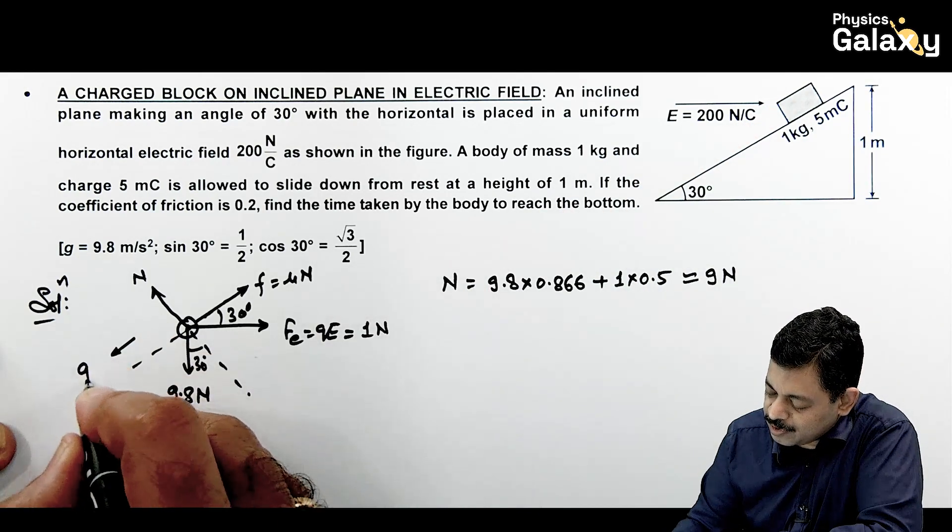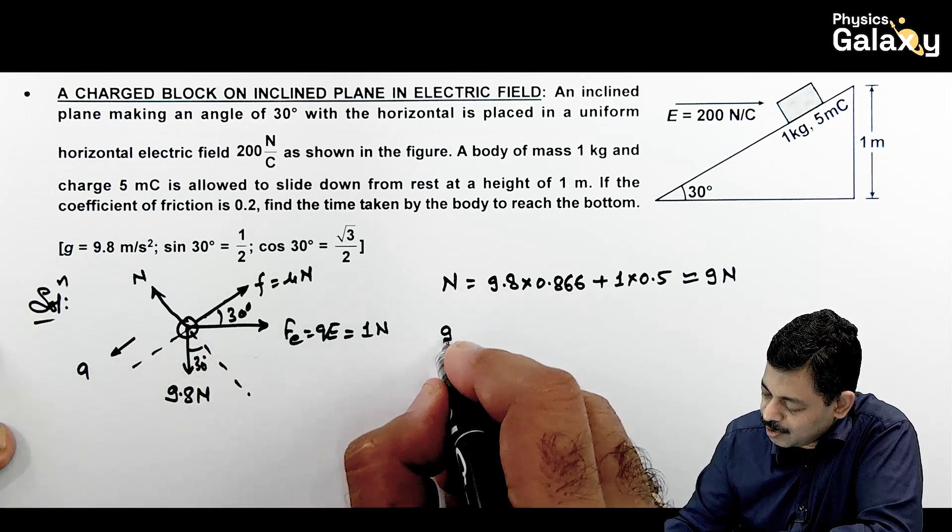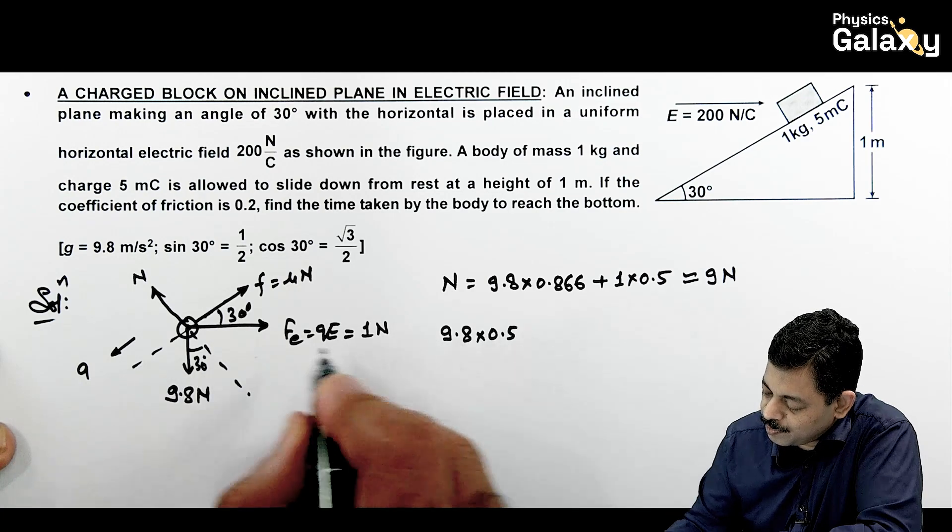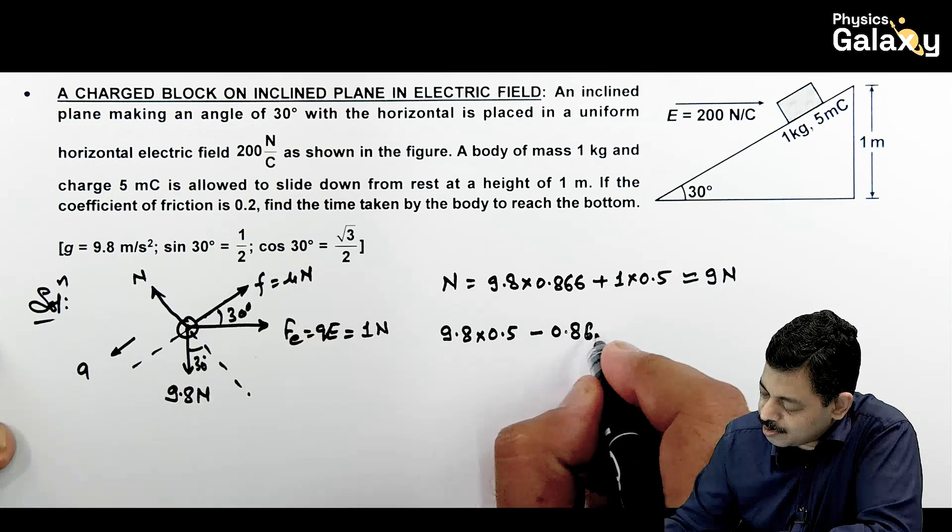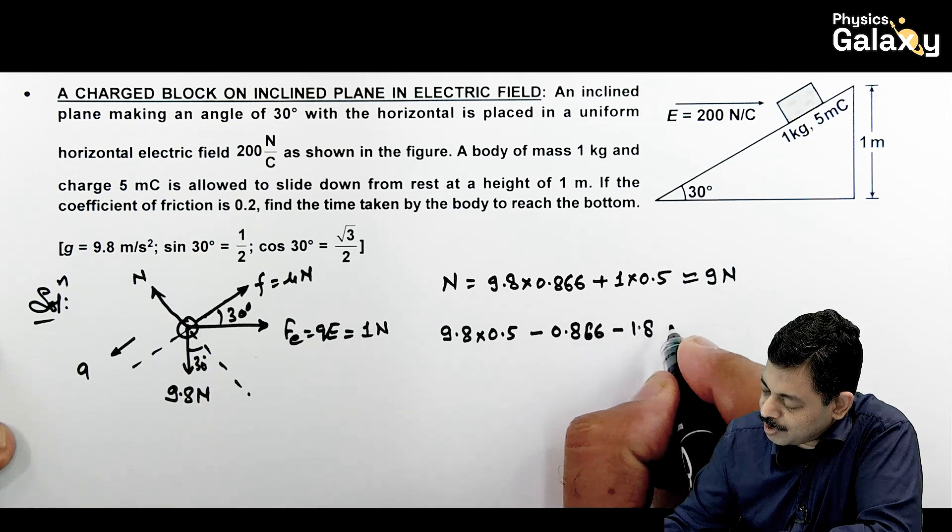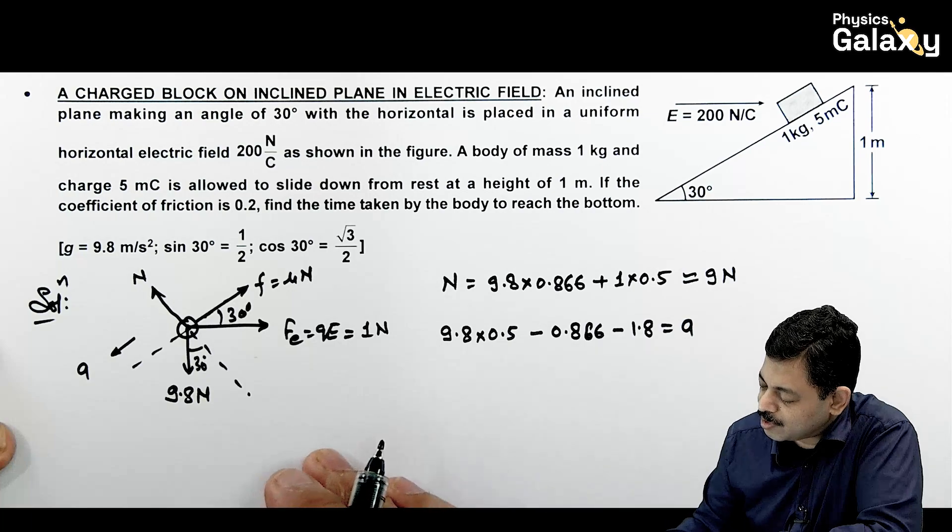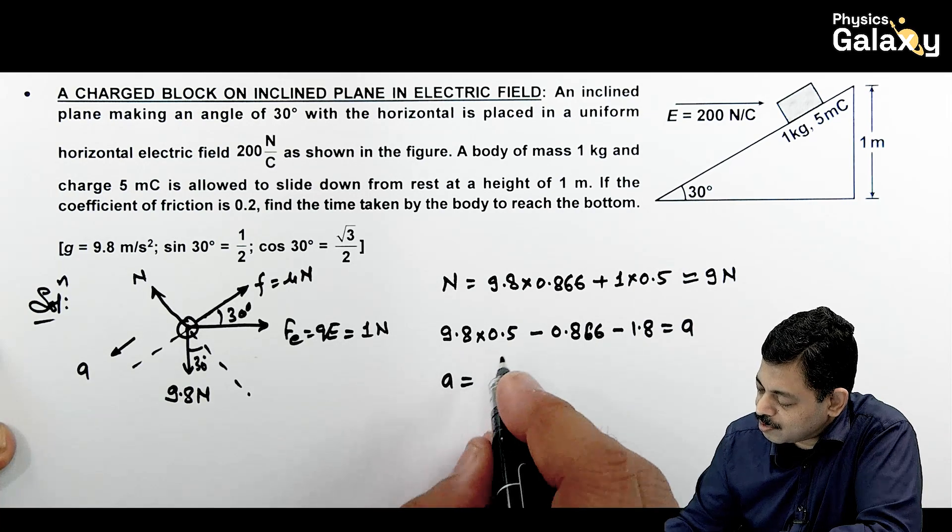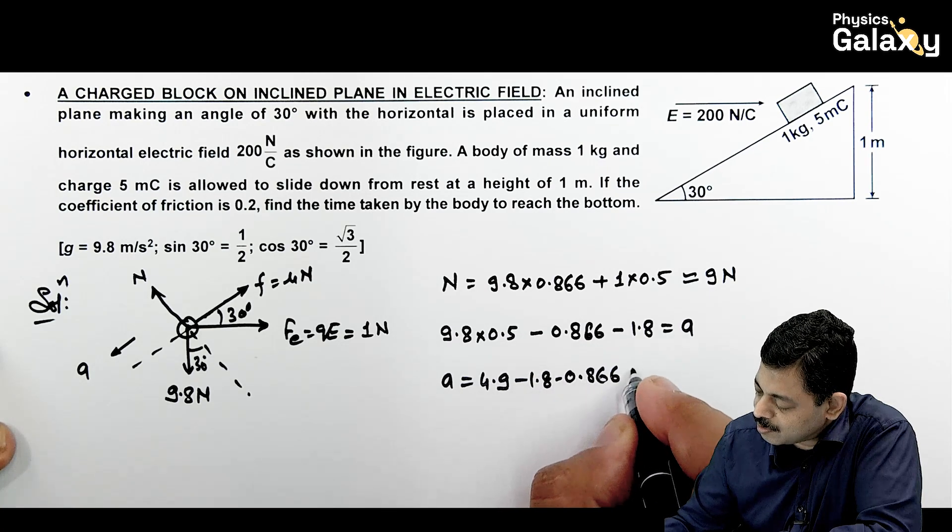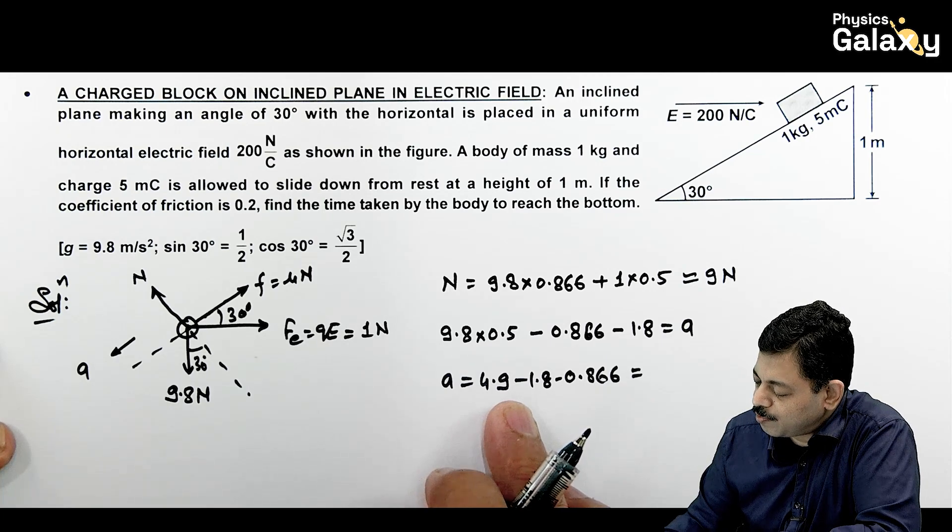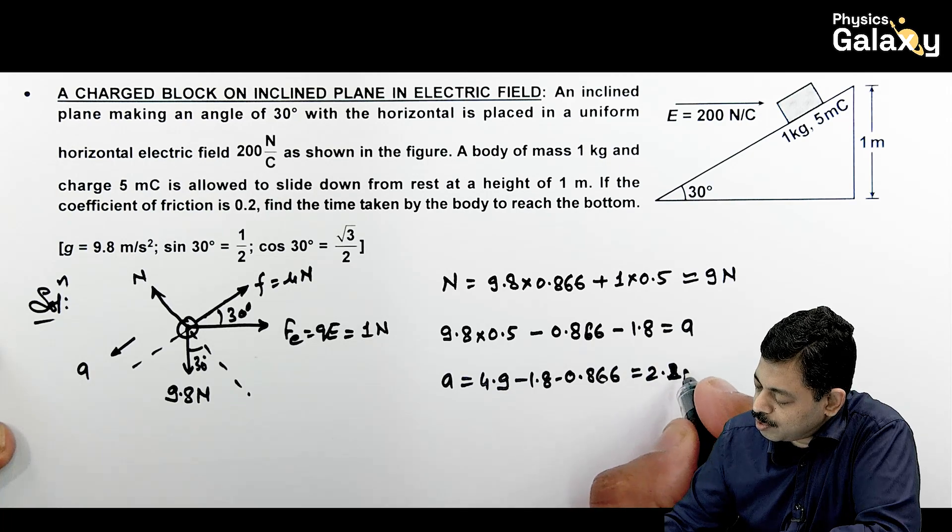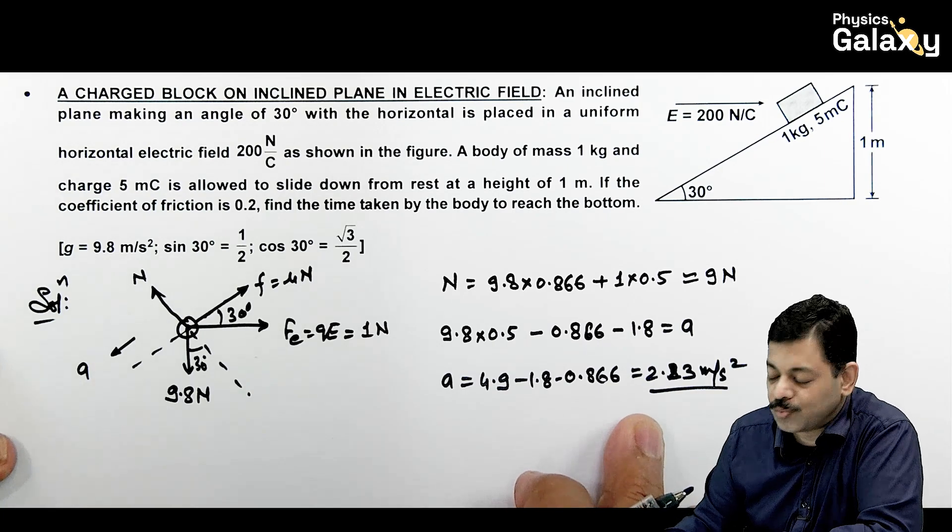And as it is sliding down with an acceleration a, so for downward motion you can write 9.8 multiplied by sin 30 degrees which is 0.5, minus 1 cos 30 is 0.866, minus mu n, mu is 0.2 multiplied by 9 is 1.8, this should equal ma. Mass is 1 kg, so this can be written as a. So the value of a we are getting in this case is 4.9 minus 1.8 minus 0.866, this comes out to be 3.1 minus 0.86 is 2.23 meter per second square.